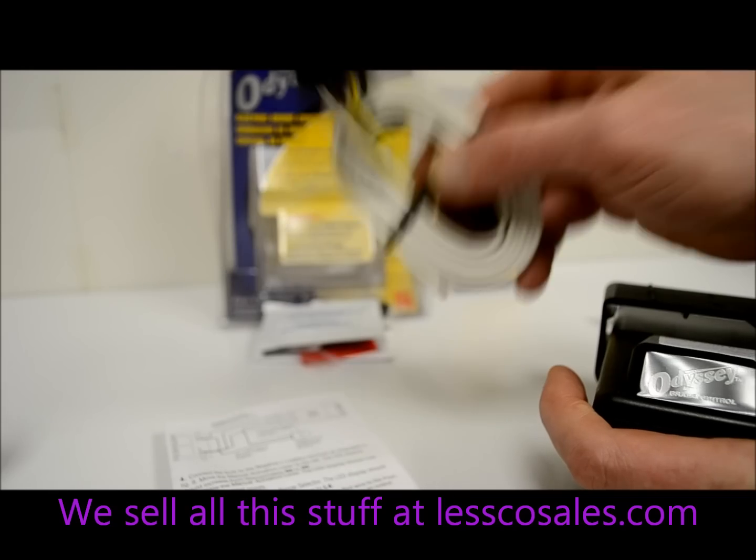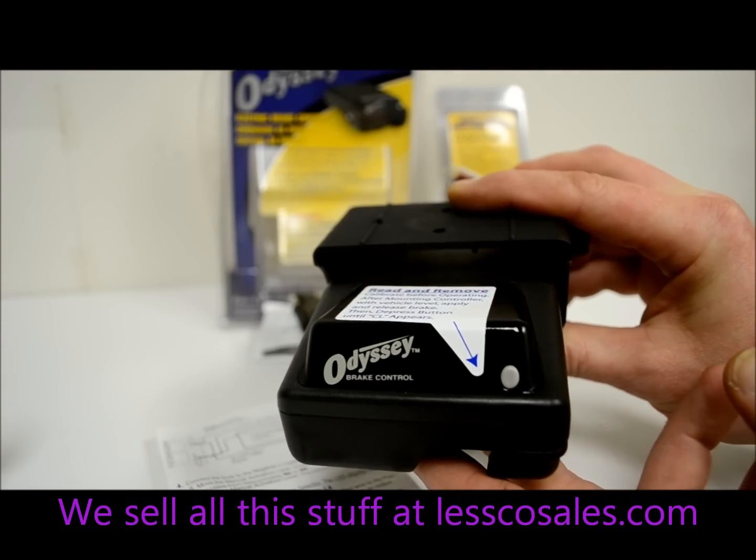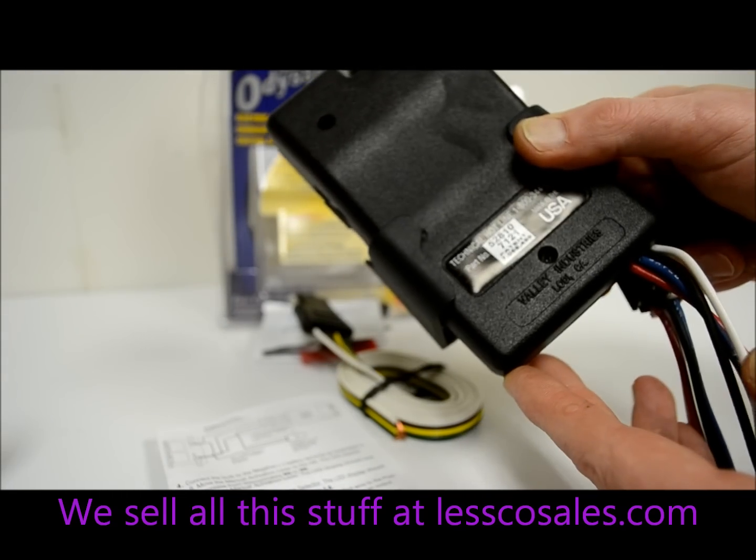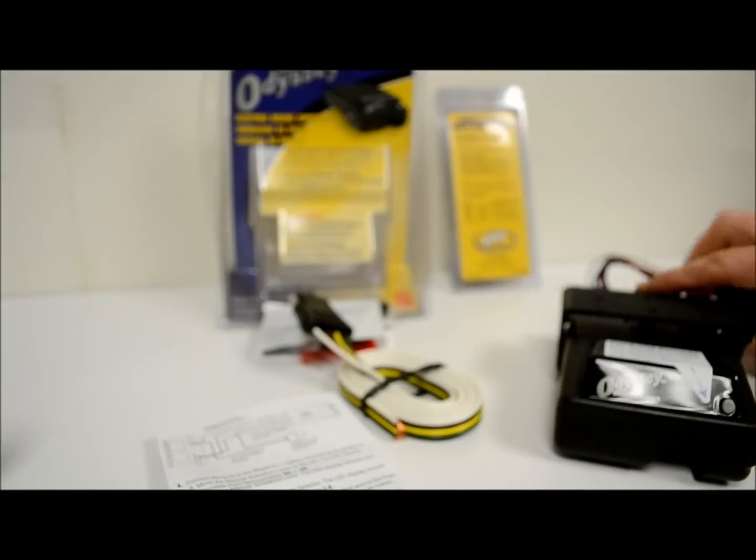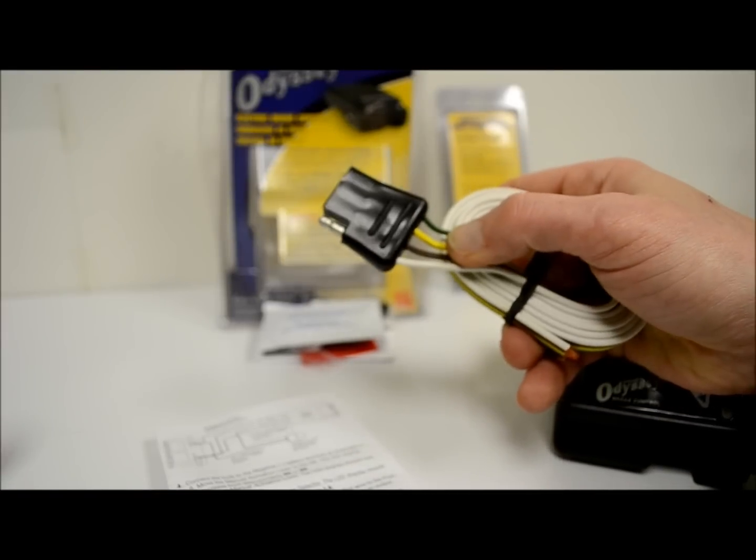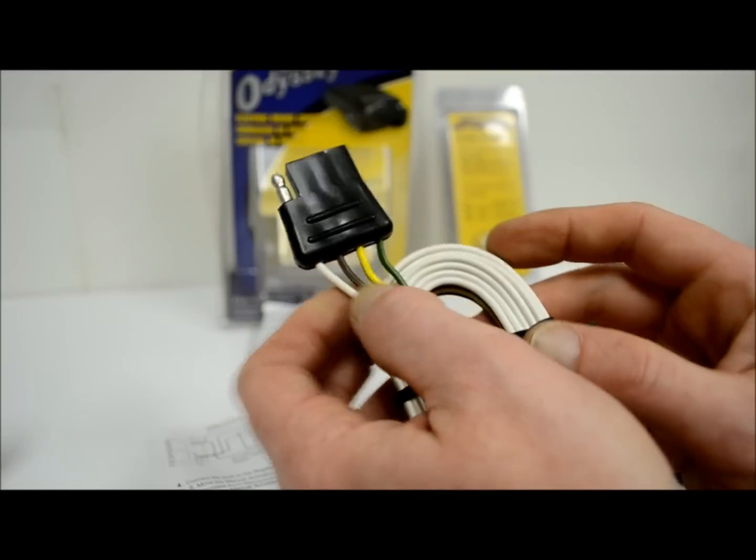Like I said, the 4-pin flat harness. I also have an electric brake module. Both of these products are made by Valley, it's a line that we sell and stock. It's the stuff that I use, the stuff that I like. But regardless of the brand, these colors and the functions and how they install are pretty much across the board all the same.